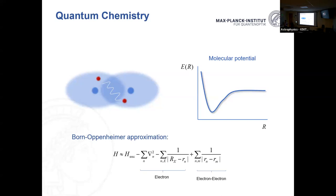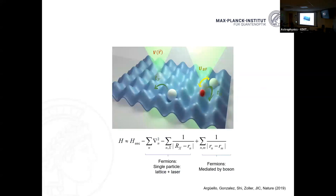For a quantum simulation of quantum chemistry, one of our ideas from a paper we wrote some years ago is: since the nuclei are fixed and electrons are fermionic, take fermionic atoms in an optical lattice to naturally represent the fermionic degrees of freedom. As the atoms hop on the lattice, this corresponds to the discretized kinetic energy. For the electron-nuclei interaction, the nuclei are at fixed positions, so at certain sites on the optical lattice you create an attractive potential for the atoms, representing the Coulomb attraction.